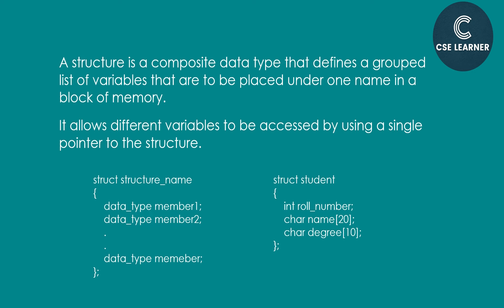So student has the variables: roll number, name, and degree — three variables. Student structure is created. How can we use it? We create an object to access the structure.